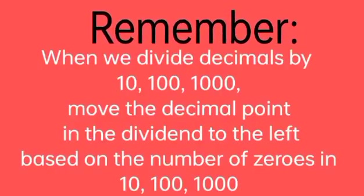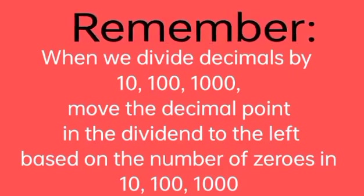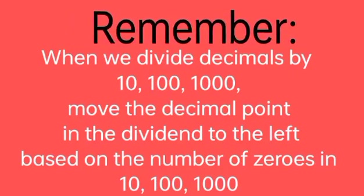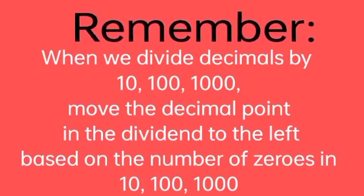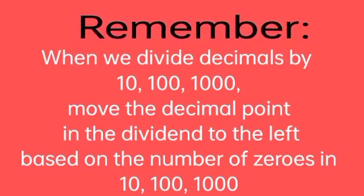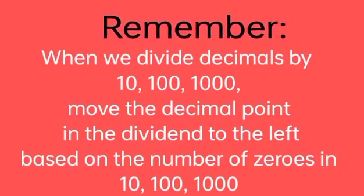That is how we divide decimals by 10, 100, and 1,000 in a faster way. Remember: when we divide decimals by 10, 100, and 1,000, just move the decimal point in the dividend to the left based on the number of zeros in 10, 100, and 1,000.